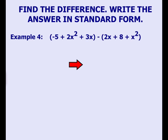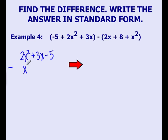To start, we need to make sure that each polynomial is written in standard form. For the first trinomial in standard form, it is 2x squared plus 3x minus 5. We are subtracting x squared plus 2x plus 8.